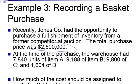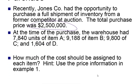Jones Company had the opportunity to purchase a full shipment of inventory from a competitor at auction. Total price was $2.5 million. That's what they paid was this $2.5 million right here. At the time of the purchase, the warehouse had 7,840 units of A, it had 9,188 units of B, it had 9,800 units of C and 1,604 of D. We want to know what cost should be assigned to each item. And we're going to use the sales prices that we had from problem number one because those are the current market values of each of these items. So with that in mind, let's make a table. Not as fun as a journal entry, but very close.